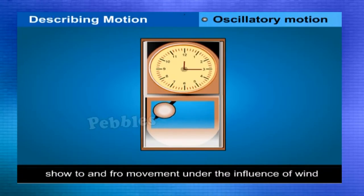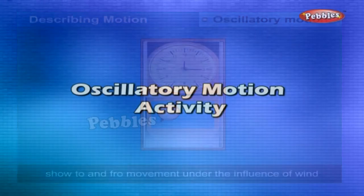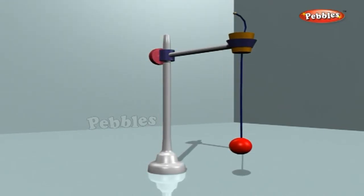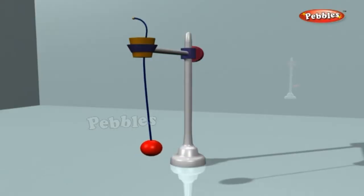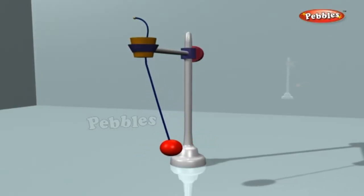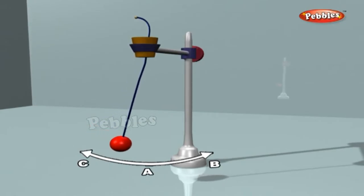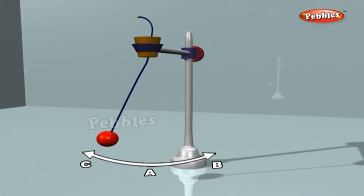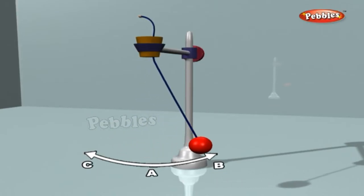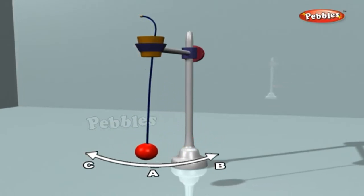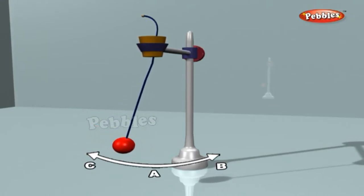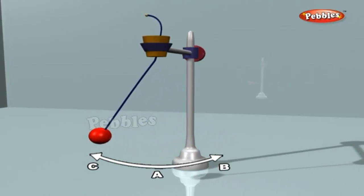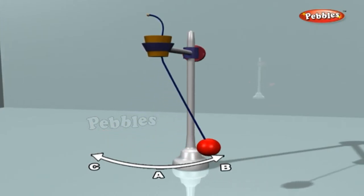Oscillatory motion activity. Take a stone and suspend it from a stand by means of a thread. Allow the stone to become stationary, now give it a gentle push. What do you notice? The stone moves to and fro about its mean position or rest position. To start with, the stone was at rest at the mean point A. It swings and moves from A to B on the right, comes back to A, moves from A to C on the left, and again comes back to A. The stone has completed one oscillation.